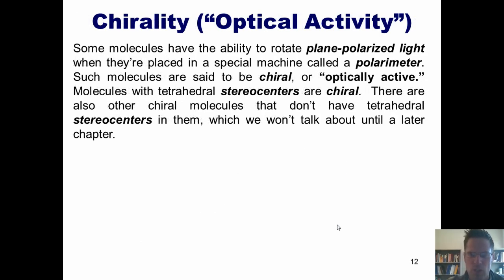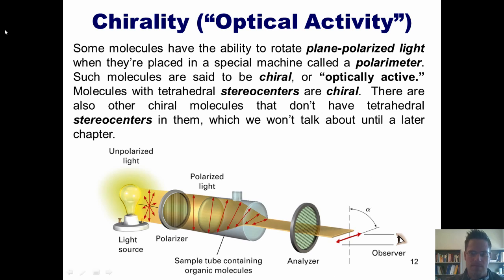Now some molecules have the ability to rotate plane polarized light when they're placed in a special machine called a polarimeter, which I've pictured here. I don't want you to get bogged down in the details of how this machine works.